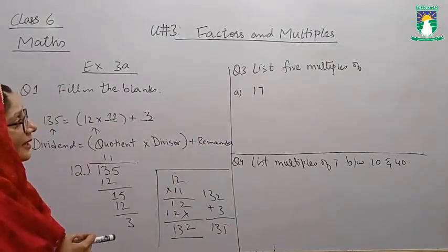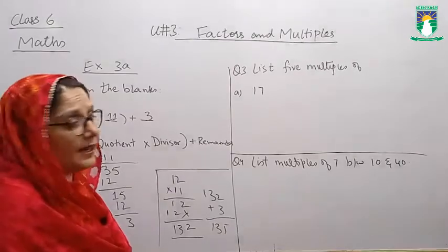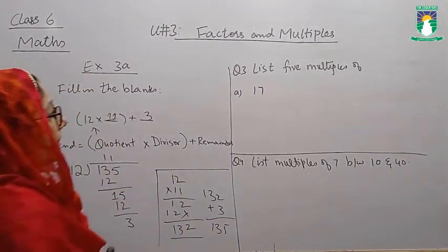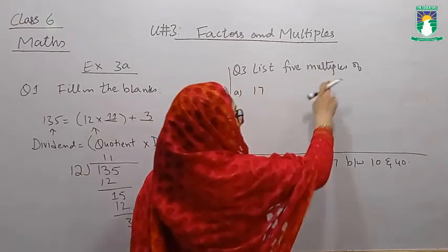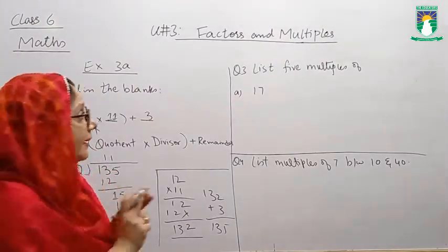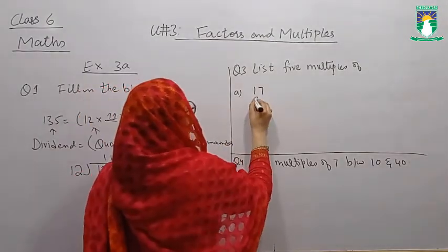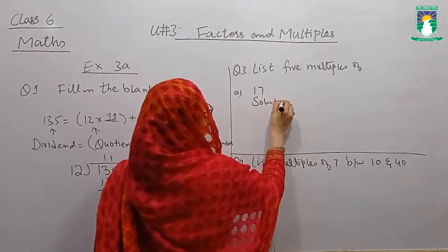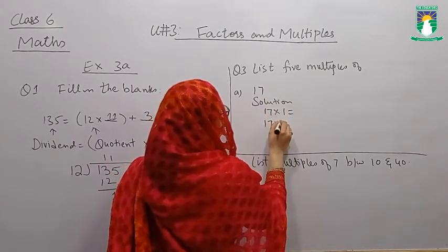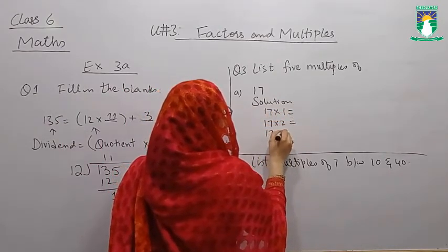Question number 3: List five multiples of 17. What does multiple mean? When you multiply two numbers, the answer is a multiple. To write multiples, you write a simple table.